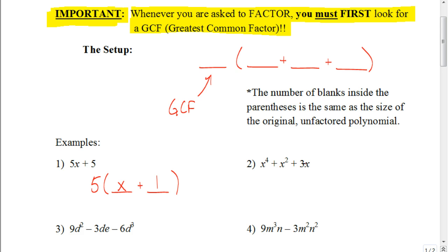Now I look at the variables. Here I have x to the 4th, x squared, and x. With those, what we do is we look at the largest exponent for that variable that they have in common. The largest one is just an x to the 1st, so I'm going to factor out x to the 1st.